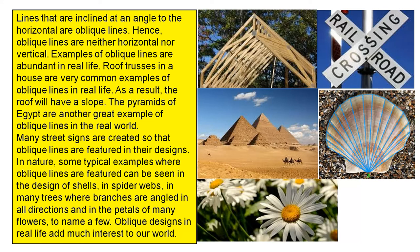Examples of oblique lines are abundant in real life. Roof trusses in a house are very common examples of oblique lines in real life. As a result, the roof will have a slope.